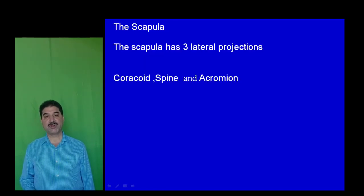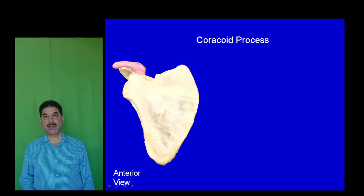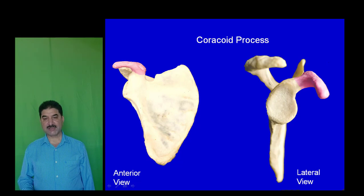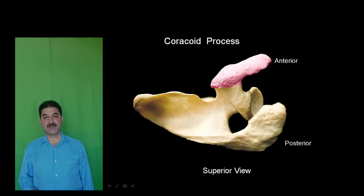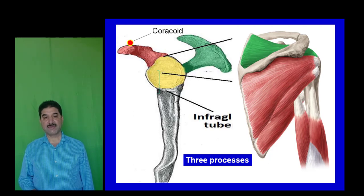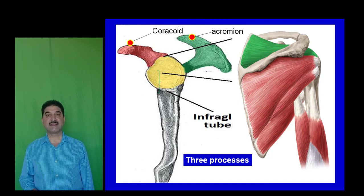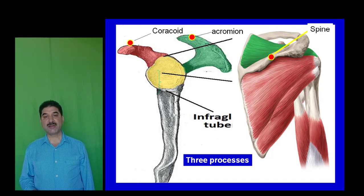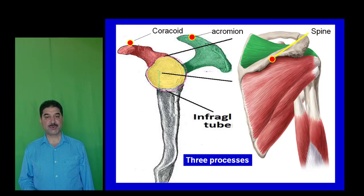The scapula presents three bony projections. Viewing the scapula anteriorly, we see the coracoid process, which hangs anterior to the glenoid cavity. The second process is the acromion, which overlies the glenoid cavity and stabilizes the shoulder joint. On the dorsal surface is the spine of the scapula. The glenoid cavity articulates with the upper end of the humerus to form the shoulder joint.